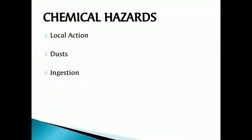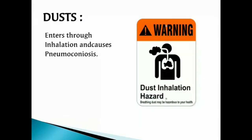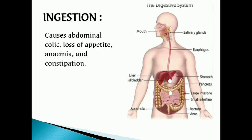Chemical hazards act via local actions, dust inhalation, and ingestion. Local action causes dermatitis, ulcers, and eczema by primary irritant actions. Dust enters through inhalation and causes pneumoconiosis — a group of lung diseases caused by inhalation and retention of dust particles. Ingestion causes abdominal colic, loss of appetite, anemia, and constipation.